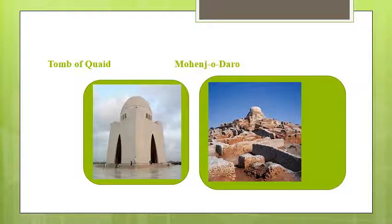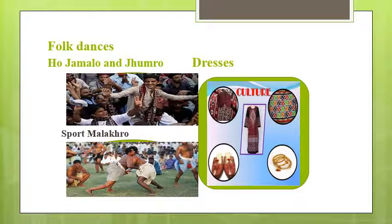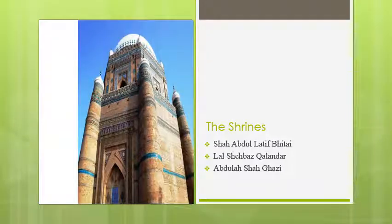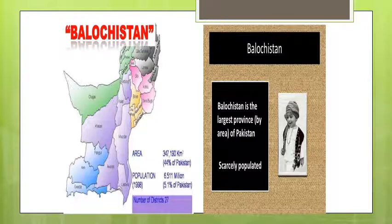The mausoleum of Quaid-e-Azam is in Karachi. The archaeological site of Mohenjo-daro is also in Sindh. The traditional dances are Ho Jamalo and Jhumroo, and the traditional sport is Malakhra. Sindhi Topi and Ajrak distinguish their dress from other provinces. The shrines of Shah Abdul Latif Bhittai, Lal Shahbaz Qalandar, and Abdullah Shah Ghazi hold huge importance for the people.